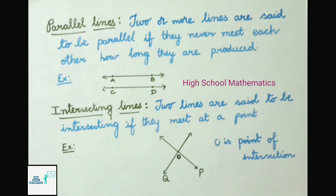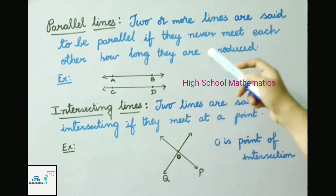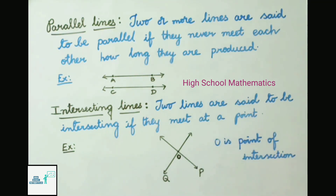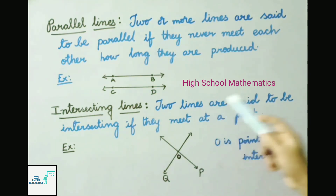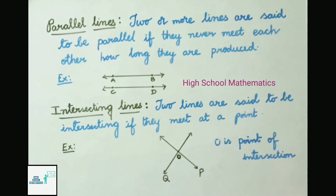Parallel lines: two or more lines are said to be parallel if they never meet each other, however long they are produced. Example: AB and CD are parallel lines that do not meet. Intersecting lines: two lines that meet at a point — here lines P and Q meet at point O, which is called the point of intersection, and P and Q are called intersecting lines.